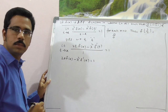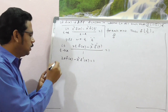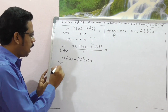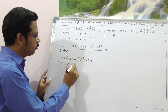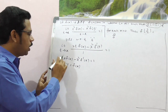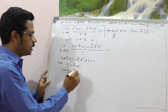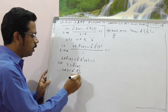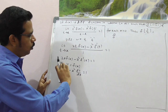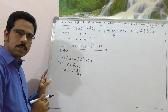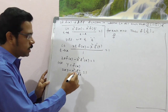Substituting t = x gives: 2x·f(x) − x²·f'(x) = 1. For clarity, let y = f(x). Then f'(x) = dy/dx. So the equation becomes: 2x·y − x²·(dy/dx) = 1. This is a differential equation.